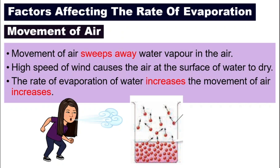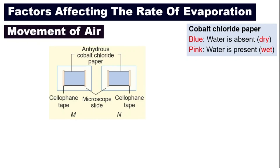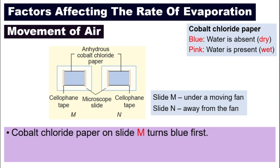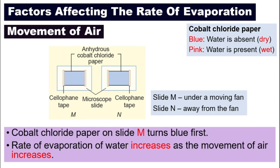To test this out, we will use cobalt chloride paper again, taped onto two different slides: M and N. We spray water on them so they become wet and pink. We put slide M under a moving fan, and slide N away from the fan. You will find that slide M turns blue first, because the rate of evaporation of water increases as the movement of air increases.